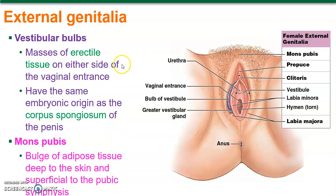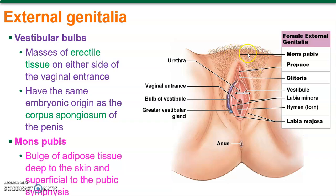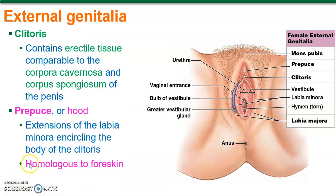Vestibular bulbs are erectile tissue — not only do men have erectile tissue, women have it as well. It's homologous to the corpus spongiosum, which is erectile tissue in the male penis. Mons pubis — the pubic mound — is fat tissue, adipose tissue, covering the pelvic bone. If you zoom in with X-ray, you've got the pelvic bone but there's connective tissue where it's not one entire bone, so there's some give to it. That's most important during childbirth.